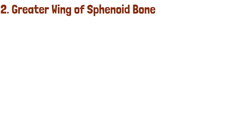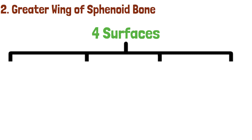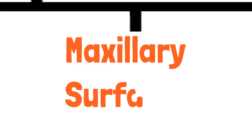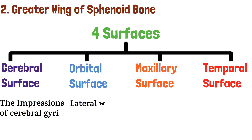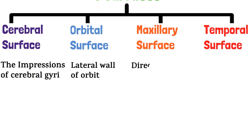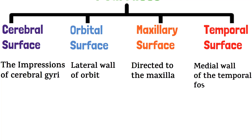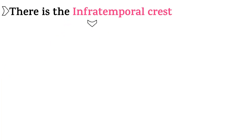Before moving further, I would like you to pause the video and write all these parts on a piece of paper for better learning. The next part of the sphenoid bone is the greater wing. The greater wing has 4 surfaces: the cerebral surface, orbital surface, maxillary surface, and the temporal surface. The cerebral surface has impressions of the cerebral gyri. The orbital surface forms the lateral wall of the orbit. The maxillary surface is directed towards the maxilla. The temporal surface forms the middle wall of the temporal fossa. There is the infratemporal crest which separates the infratemporal surface.